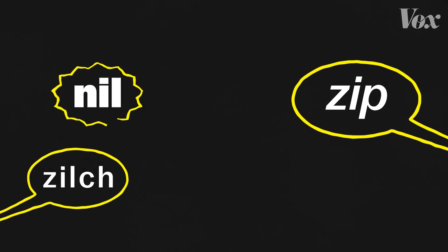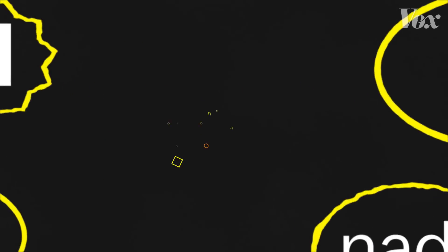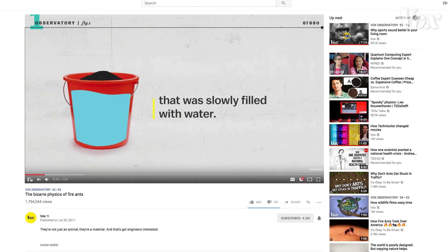Zip, zilch, nil, nada, nothing. We have a lot of words to describe zero, a number without which we wouldn't have the likes of James Bond or the code that makes this video play on YouTube.